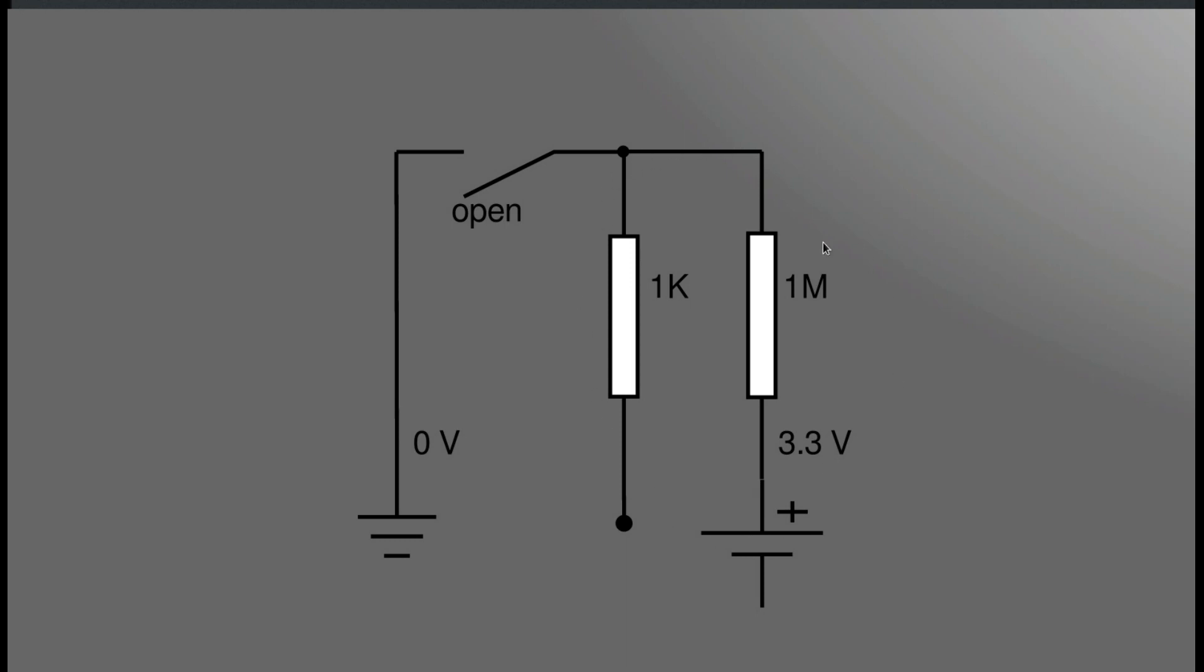There is no current flowing, so we have the same 3.3 volt potential we have here on power supply, we also have here and here. The ground is not involved and we have 3.3 volts on GPIO4.